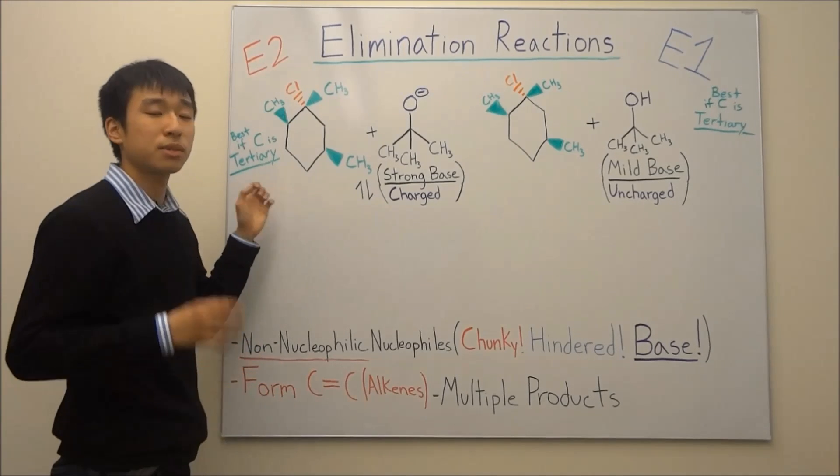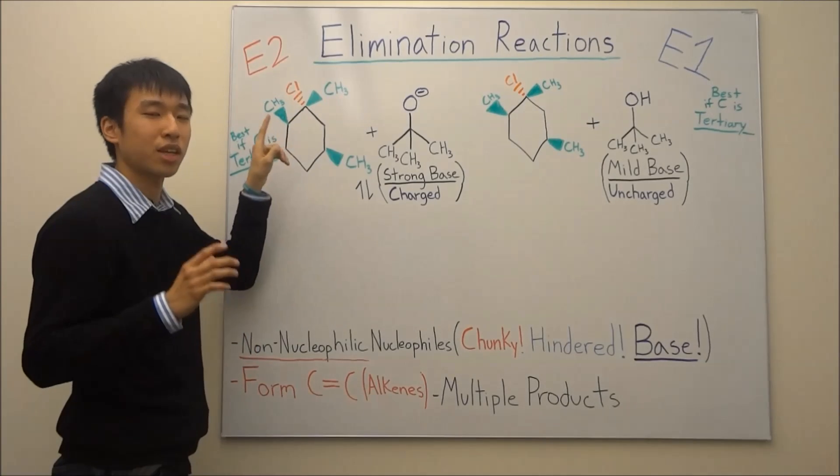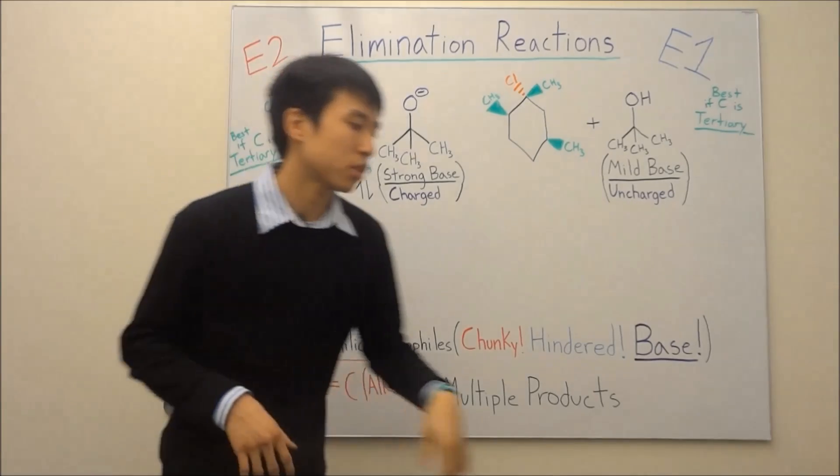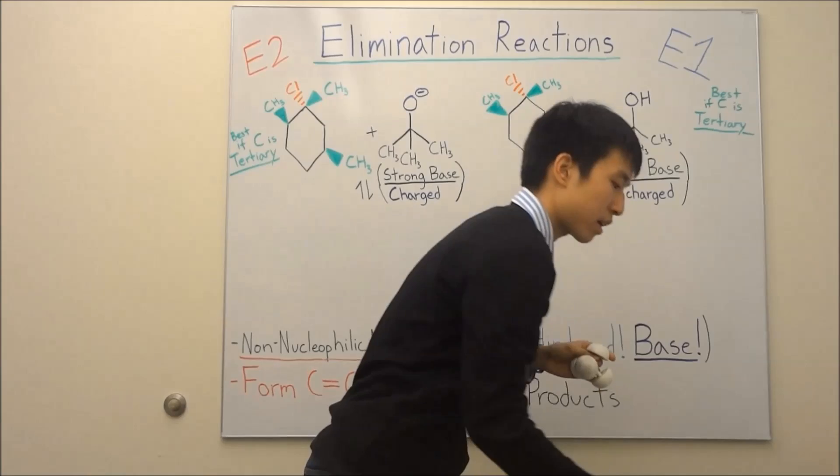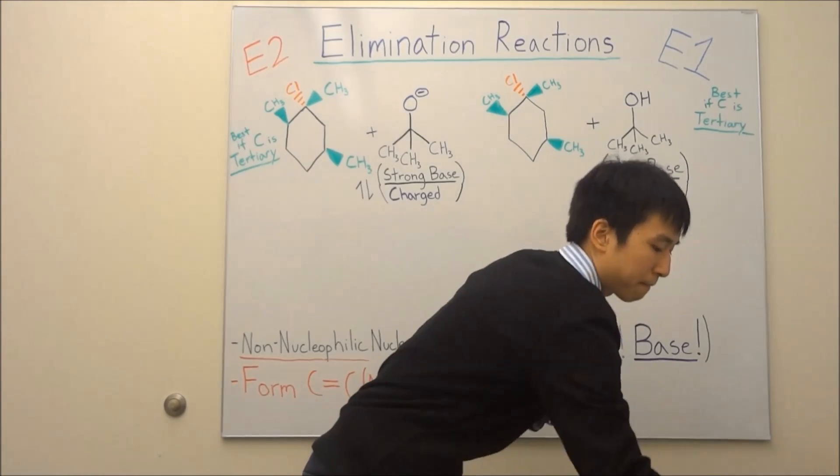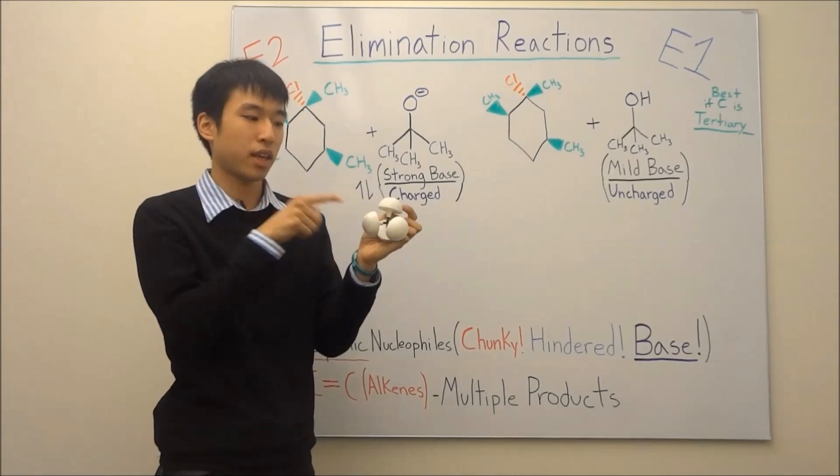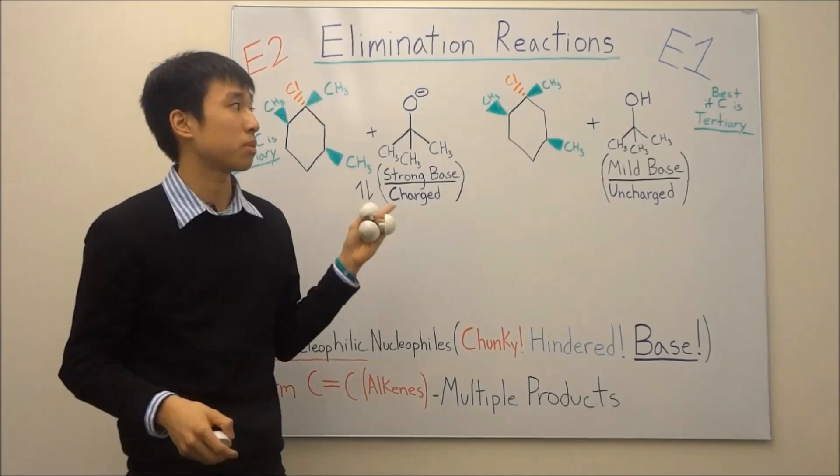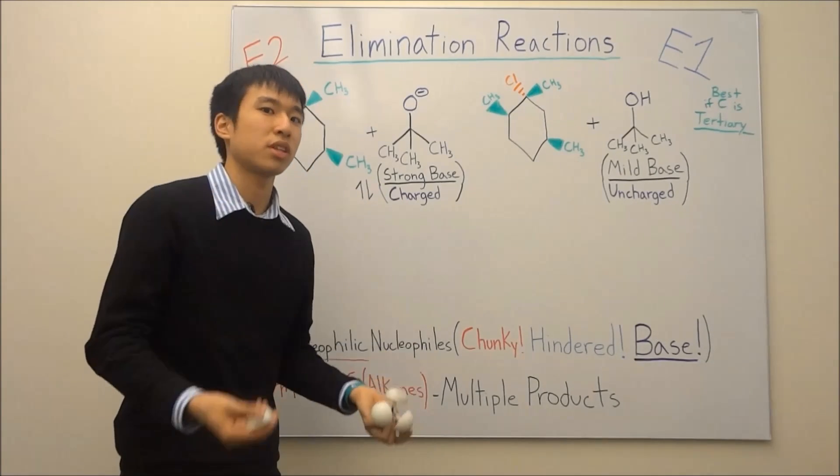Your substrate, it's best if the carbon with the leaving group is tertiary. Because this way, if it's tertiary, it's all blocked up. If you have a nucleophile trying to attack, it can't access the carbon in there. So that's why tertiary carbons are good for elimination reactions. Because you have a tertiary carbon, substitution can't really occur.